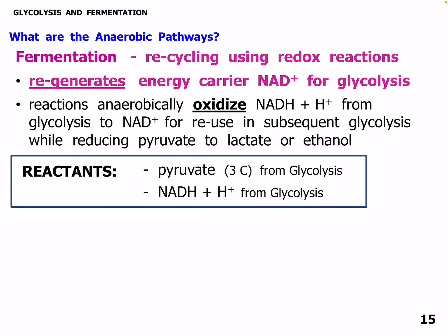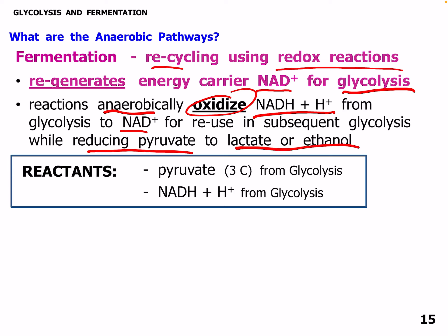Fermentation is used by organisms and cells in the absence of O2. It derives energy from glycolysis and fermentation through partial oxidation — that's why it's considered partial oxidation of glucose. It occurs in the cytoplasm of O2-deprived cells. Fermentation recycles the reactants to allow ATP production to continue in glycolysis without O2 — there's no additional energy produced with fermentation. The reactants from glycolysis are 2 three-carbon pyruvates, plus NADH and hydrogen ions from glycolysis.